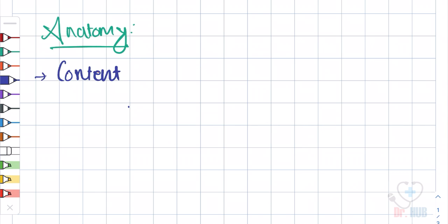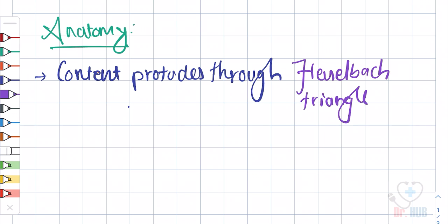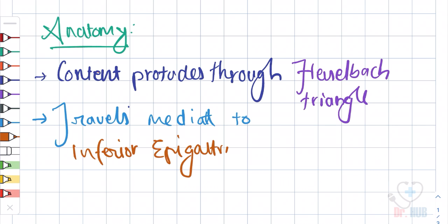The content protrudes through Hesselbach's triangle and travels medial to the inferior epigastric vessels.